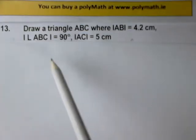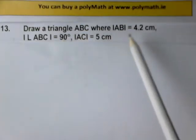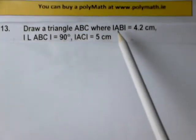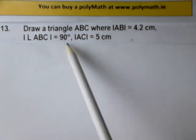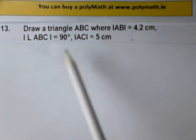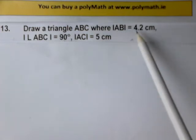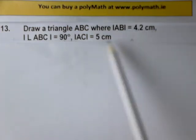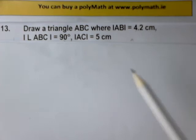I'm asked to draw a triangle ABC which is a right-angled triangle because angle ABC is 90 degrees, and I'm given the length of AB as 4.2 centimeters and the length of AC as 5 centimeters.